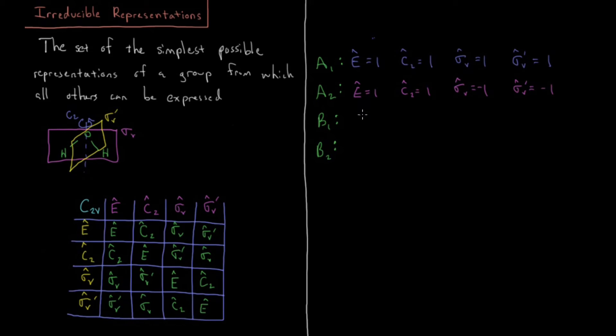What about this B1? For this B1, I'm going to define it as E equals 1, C2 equals minus 1, sigma V equals 1, sigma V prime equals minus 1. And if you work through this table, you'll find out that that works in the same way. Everything is true under the multiplication table.